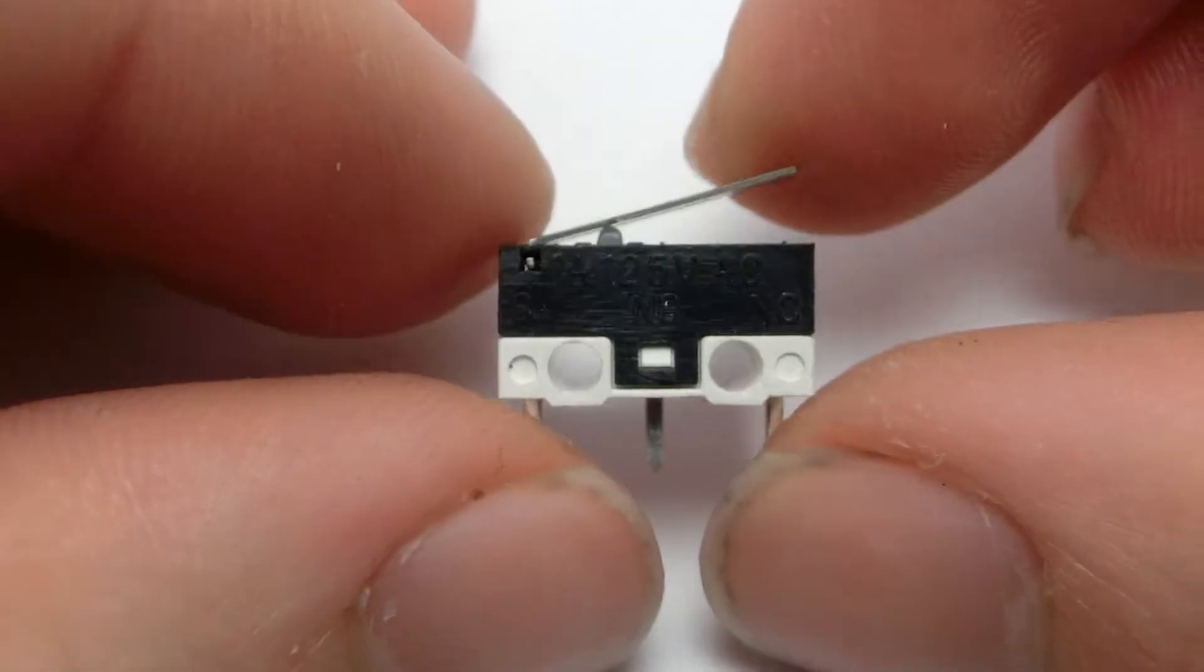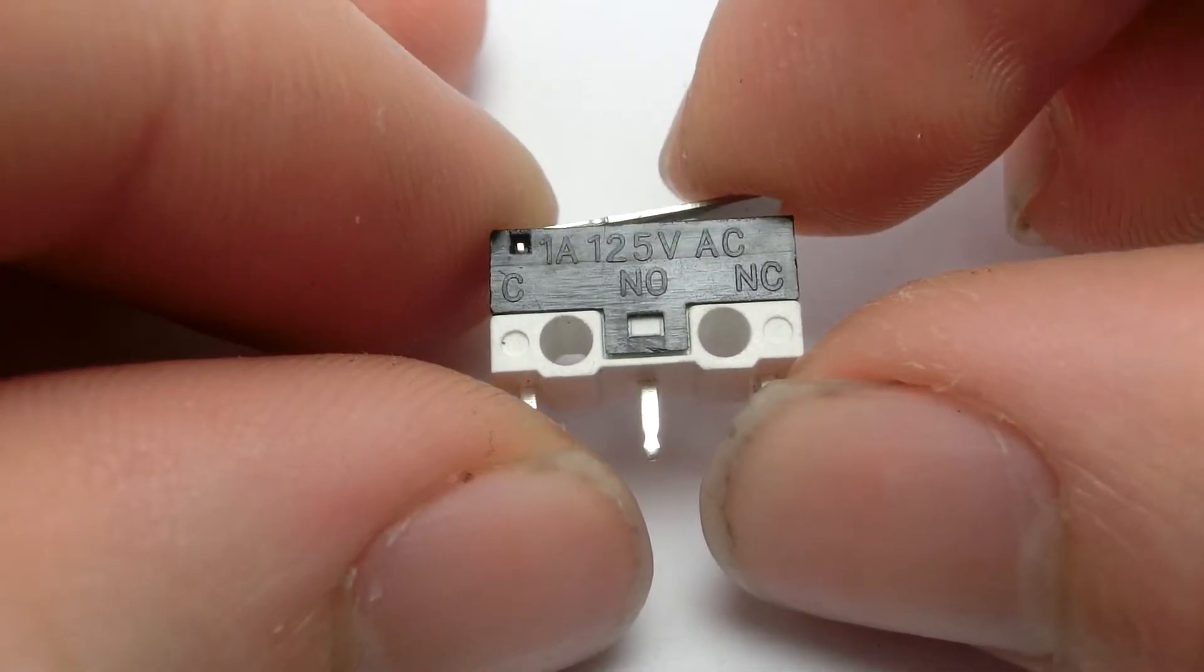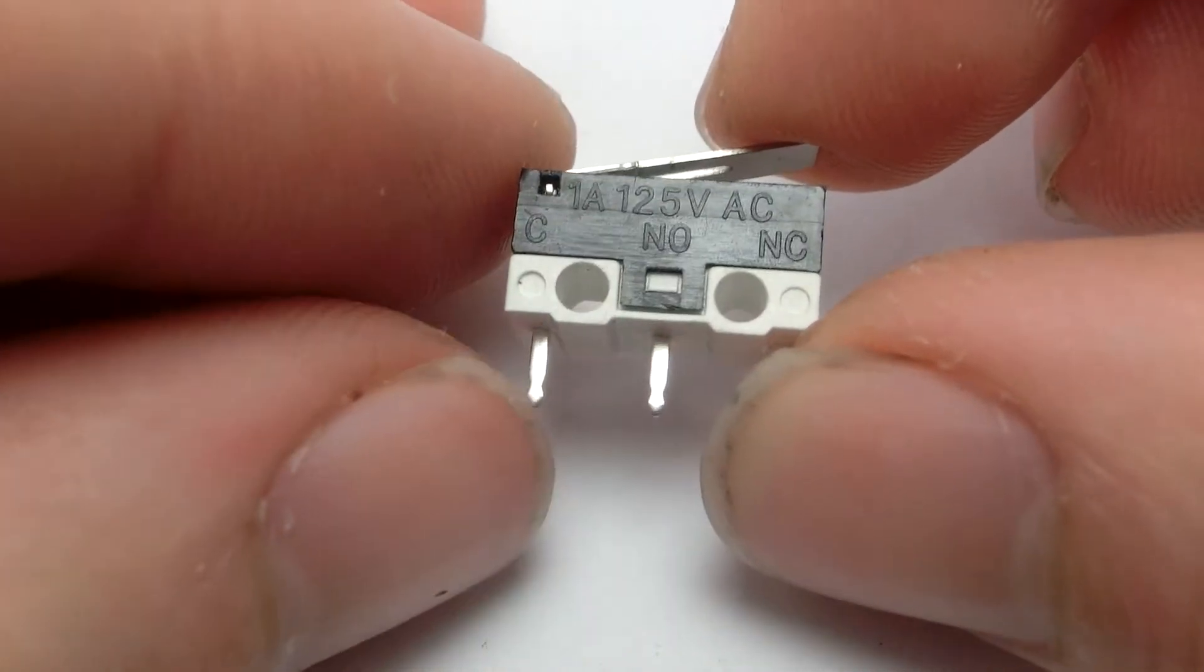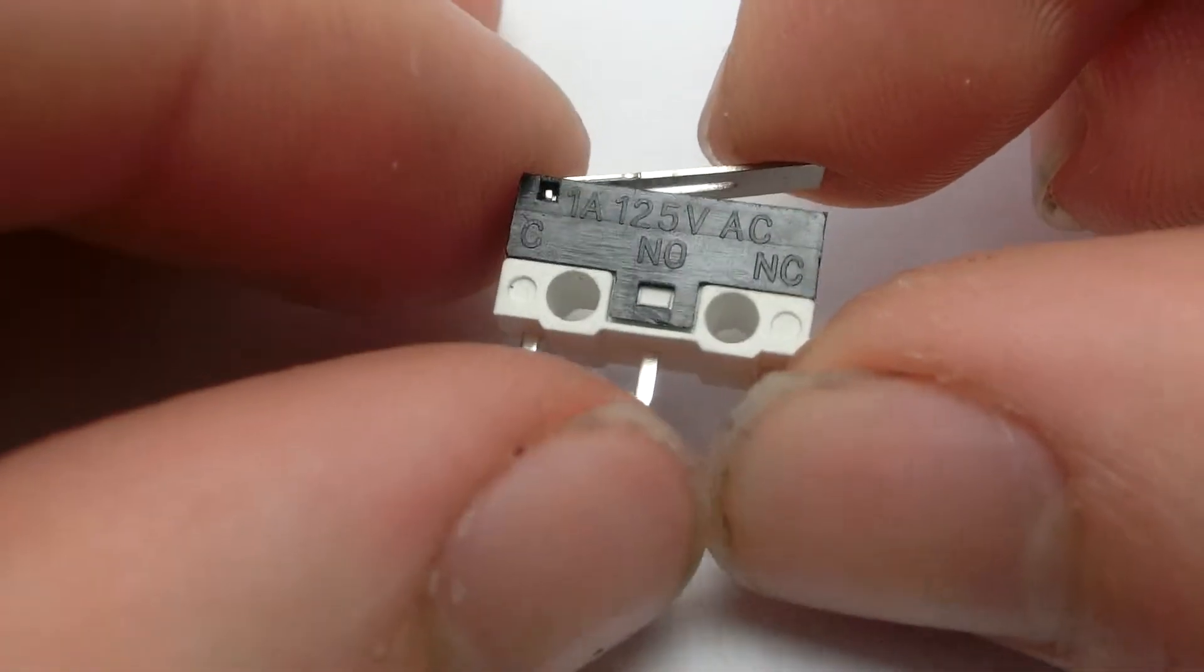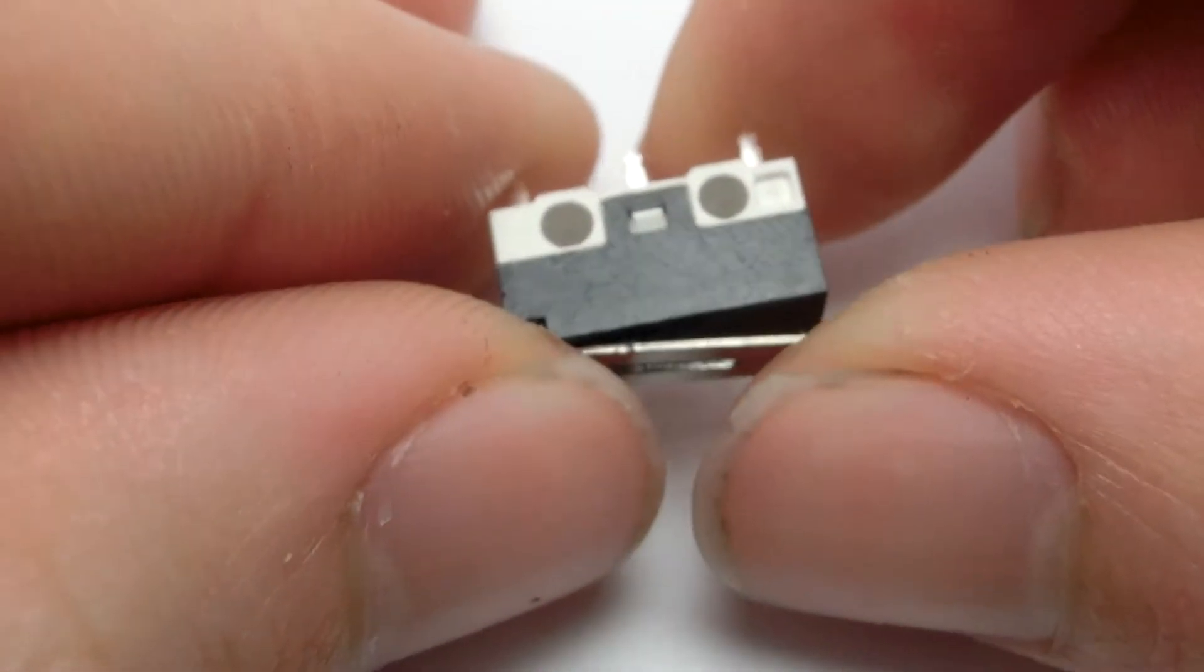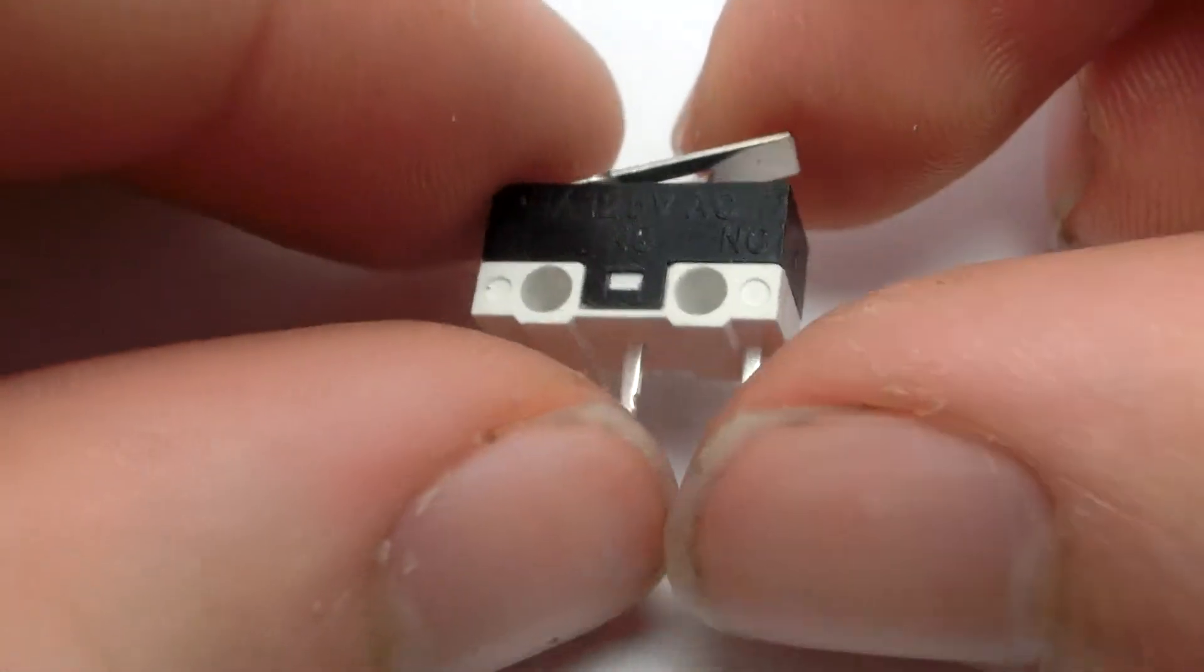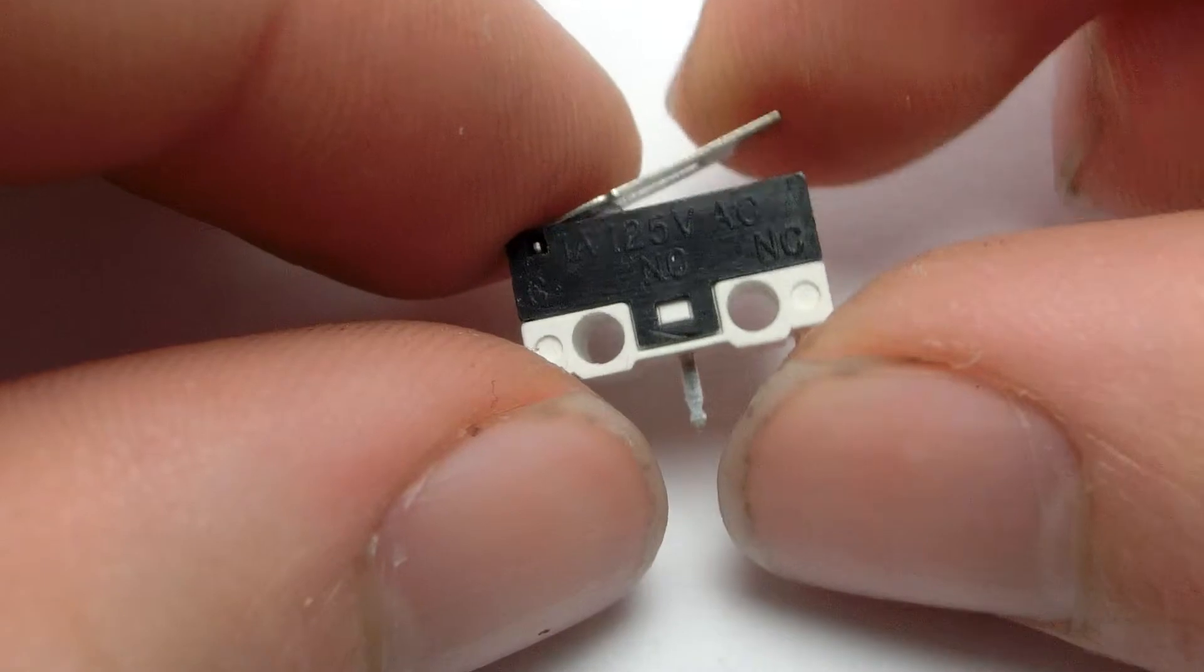So this is a pretty standard little limit switch or micro switch. You get 1 amp, 125 volts AC. It's got normally open and normally closed outputs. And I was kind of curious as to what's inside these that makes them work so dependably. Supposedly these can be used 30,000 times before they wear out.